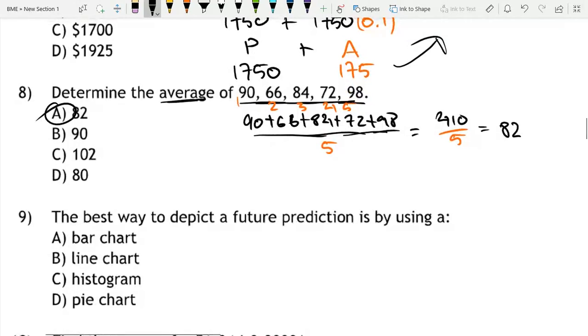The last one is the best way to depict a future prediction is simply by using a line chart. A line chart would normally look like this, and it'll show you a trend. And then, you know, if you see a chart like this, you'll say, okay, well, in the future, it'll probably continue to rise. So line charts are the best. We have more videos on charts where we go deeper into this and we explain it a bit more clearly.